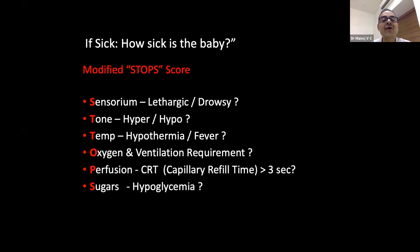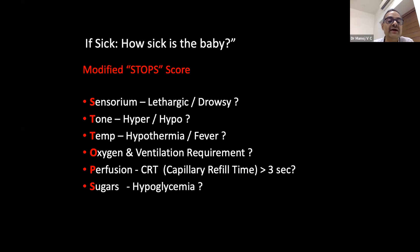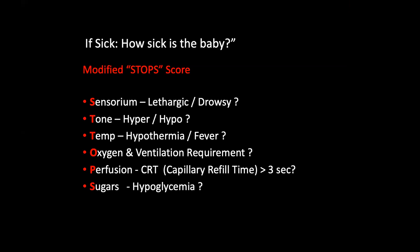Once you have decided the baby is sick, the next task is to decide how sick. The simplest way recommended for transport is the modified STOPS score: S — sensorium (is the baby lethargic or drowsy?), T — temperature (hypothermic or febrile?), O — oxygenation and ventilation requirement, P — perfusion (capillary refill time, ideally less than 3 seconds), and S — sugars.